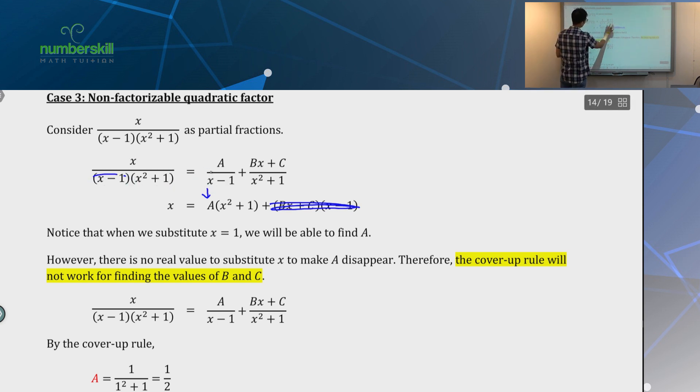But what won't work is finding B and C. Because if you want to find B or C, you must understand that there's no way of you making A disappear. No way. Because this X squared plus 1 will never be 0. Agree? So, you cannot say, I put in a number, A disappear. No. You can't. So, basically, for this kind where it involves this X squared plus 1, it's just troublesome. Even with cover up rule, it only helps you with this. Finding of A. It will not help you with finding B and C.